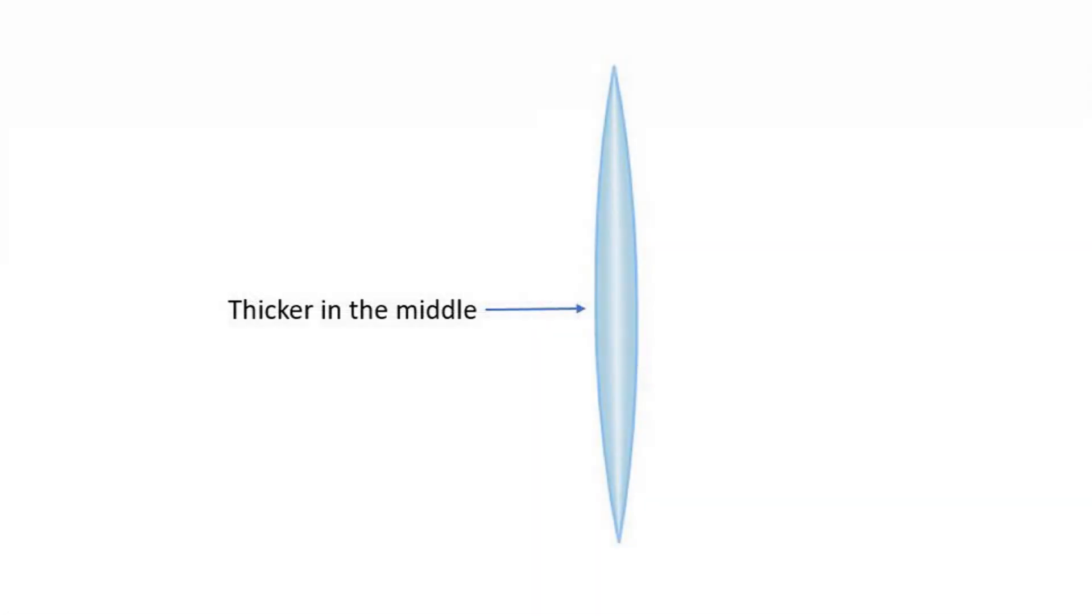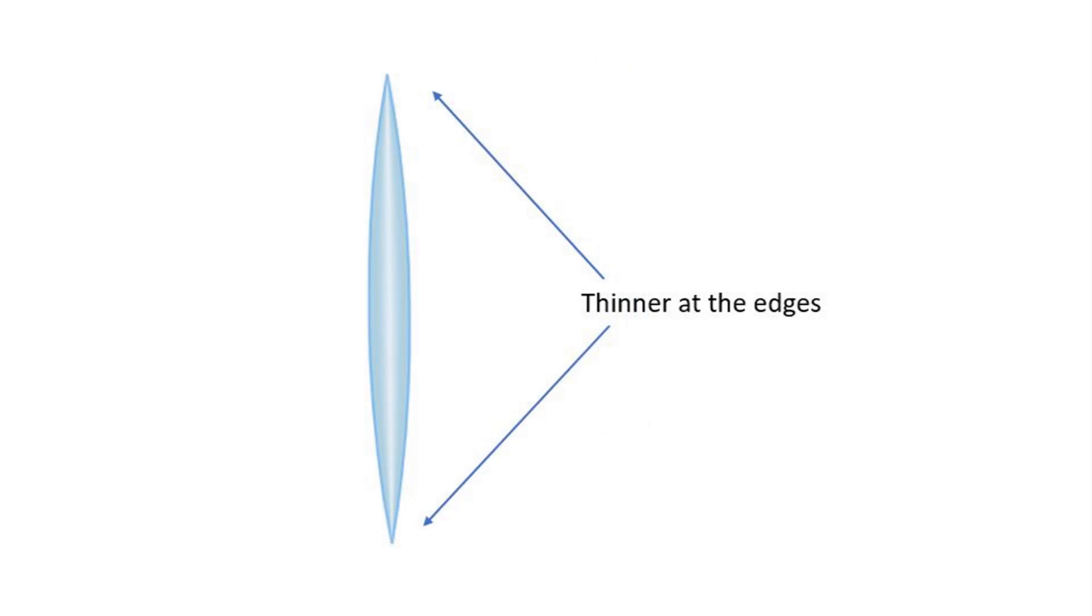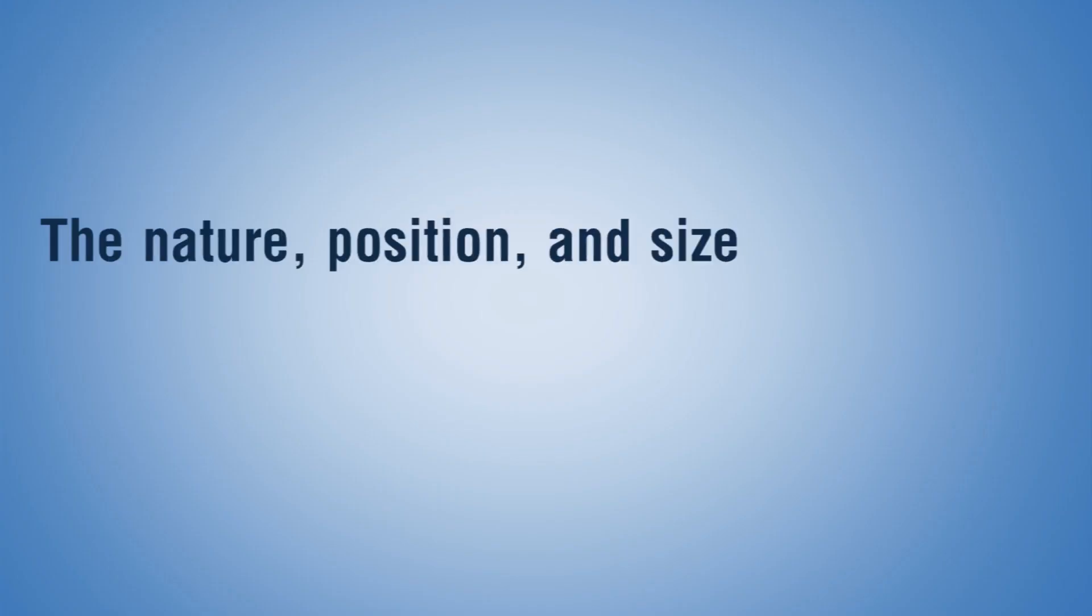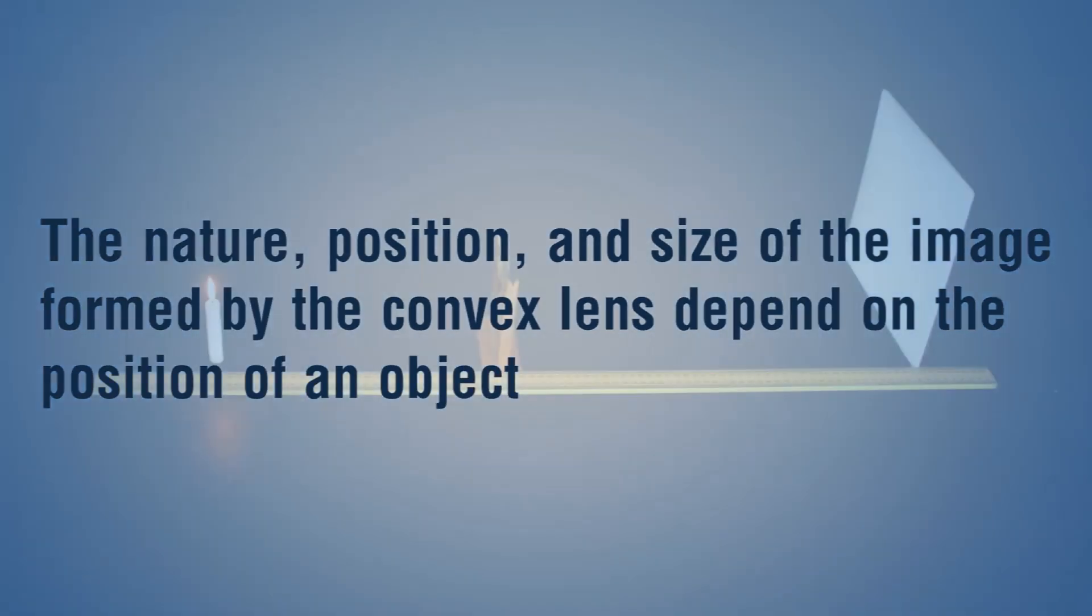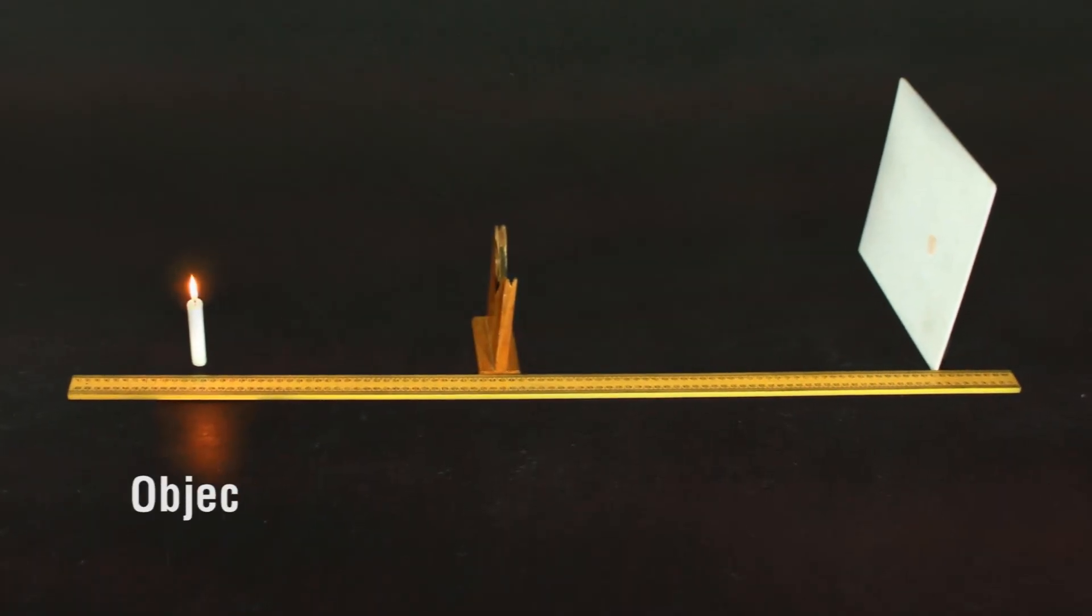Convex lenses are thicker in the middle and thinner at the edges. The nature, position, and size of the image formed by the convex lens depend on the position of an object. It can be studied by keeping the object and the lens on the same straight line and observing the image for different object distances.